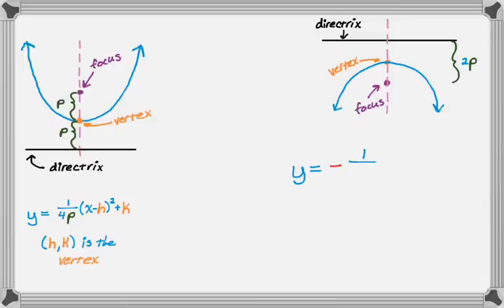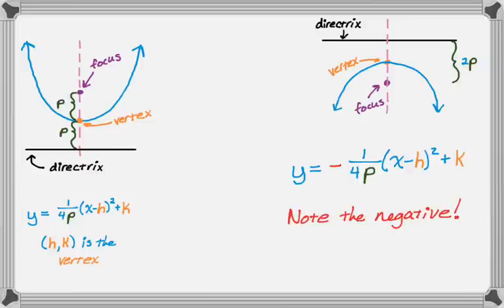If we have this type of parabola, we get y equals negative 1 over 4p, the quantity x minus h squared plus k. What you need to pay attention to is that negative sign. If it opens down, if the focus and vertex are below the directrix, you have a negative in your equation.